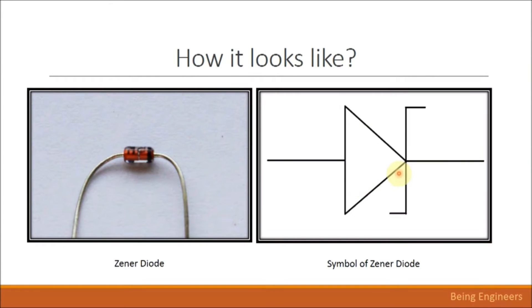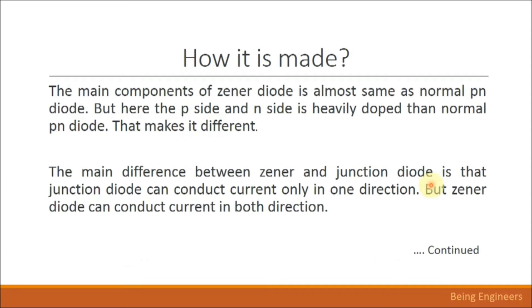In forward bias, the N-side is connected to the battery's negative terminal and the P-side is connected to the positive terminal. In this condition, current flows from the P-side to the N-side in a normal diode. In reverse bias, current doesn't flow in a normal diode. But in the xenon diode, if it is in reverse bias condition, current flows after a certain limit — this is called the breakdown voltage or xenon voltage.